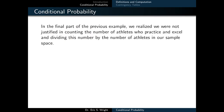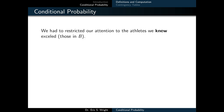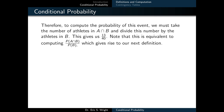We realized we were not justified in simply counting the number of athletes who practice and excel and dividing by the total athletes in our sample space. We had to restrict our attention to the athletes we knew excelled — those in event B. So to compute the probability of this event, we take the number of athletes in A intersect B and divide by the number in B, giving 13 over 40. This is equivalent to computing the probability of A intersect B divided by the probability of B, and this gives rise to our next definition.